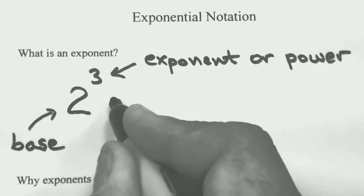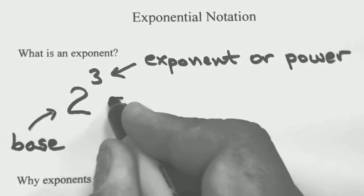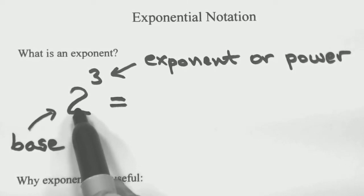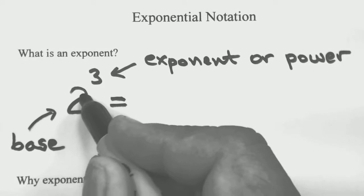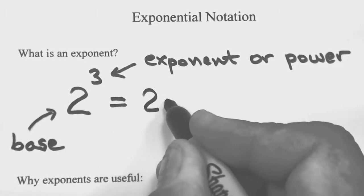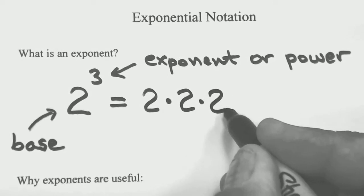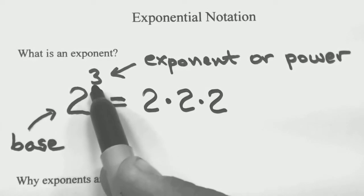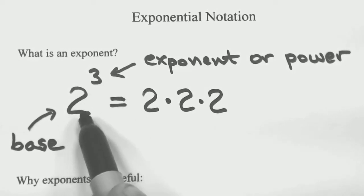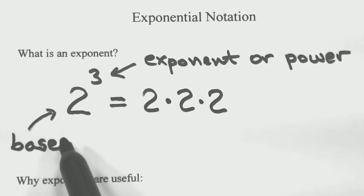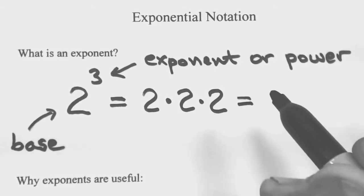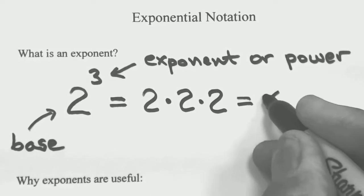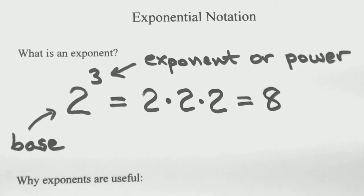Here's the thing you need to remember about how exponents work: the exponent tells you how many times you have the base number multiplying itself. For instance, 2 cubed means 2 times 2 times 2 — there are a total of three 2's multiplying each other. That's what the exponent means. It tells you how many of these base numbers are multiplying each other. 2 times 2 is 4, times 2 is 8, so 2 cubed equals 8.